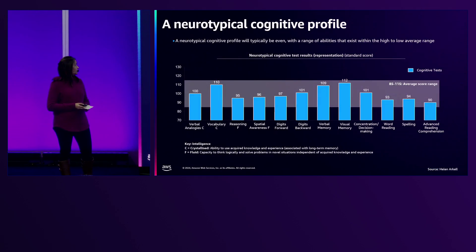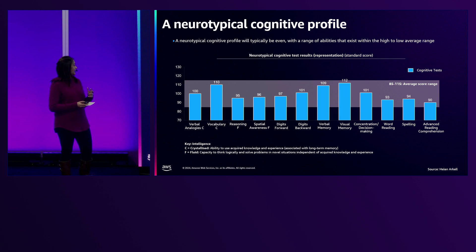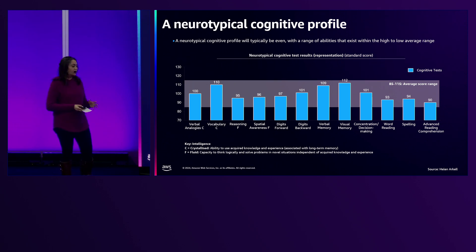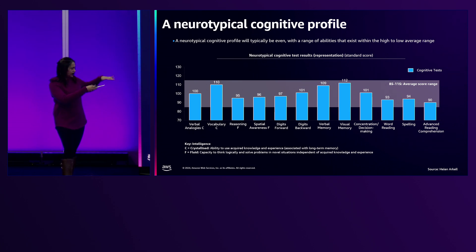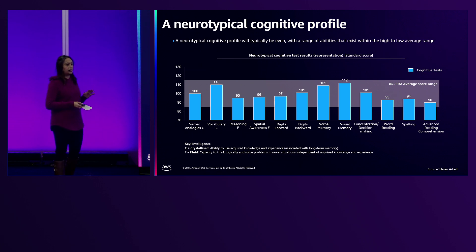Let's go one deeper layer into what it means when we say neurotypical and neurodiverse. What I'm showing here is a chart of neurotypical cognitive skills. As you can see, most skills fall within a gray average range — that's what a neuromajority or neurotypical profile actually looks like.